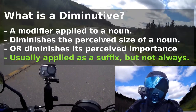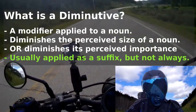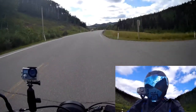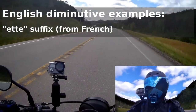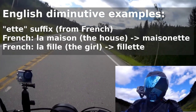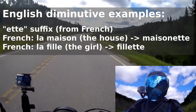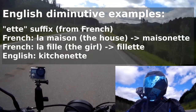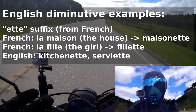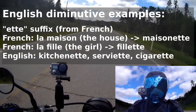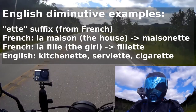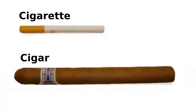When you apply a diminutive to a noun, usually — not always — it's in the form of a suffix at the end of that noun. One such suffix in English comes directly from French: E-T-T-E, "-ette." In French, "la maison" becomes "la maisonette" — literally the small house. "La fille" becomes "la fillette" — the little girl. In English we have words like "kitchenette" for a small kitchen, "serviette" for a table napkin, or "cigarette" — literally a small version of a cigar. Note that sometimes there's a pronunciation change: we don't say "cigar-ette," we say "cigarette."